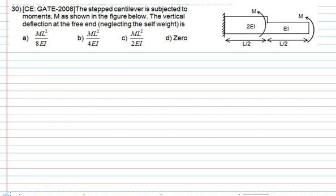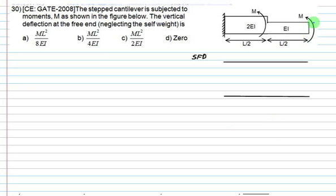We have one stepped cantilever subjected to moments M at free end and one M at center. The first part has EI equal to 2EI, second part is EI. We neglect self-weight. The bending moment diagram for the right-hand section is anticlockwise, which is positive, so it moves up. From this point to this point, it's a fixed value equal to M. Then it's further added in the same direction and finally remains constant.